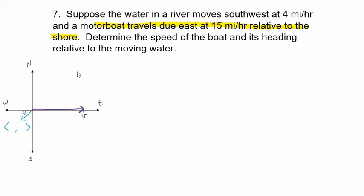The components of my boat vector are pretty straightforward because it's heading due east — the components would be (15, 0). Now, when it says the motorboat is traveling due east relative to the shore, that's the result of the boat being affected by the water. So the actual path of the boat would have to have been a little bit more north, because the current is pushing the boat southwest.